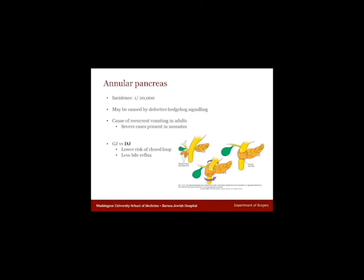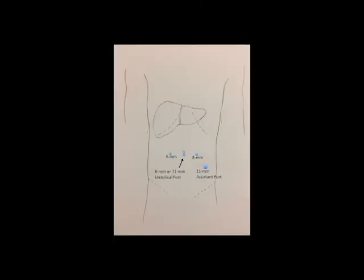A duodenal jejunostomy was preferred here. Ports were placed as described in the picture, including an 11mm assistant port to facilitate subsequent robot docking.